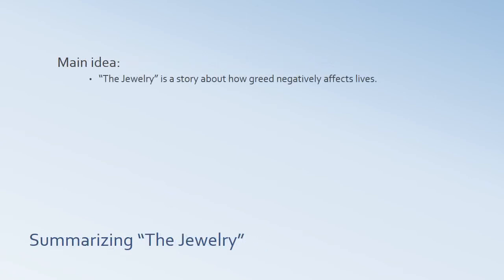Let's put this into practice and work on The Jewelry by Guy de Maupassant. What is the main idea? One of the things the story seems to be about is greed and the desire for money — and that greed does bad things to people. The pursuit of wealth at all costs has negative effects on people's lives. So our simple main idea: The Jewelry is a story about how greed negatively affects lives.